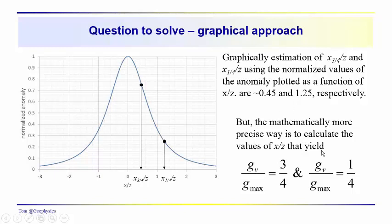But mathematically as we did for x one half, we are solving for this ratio, gv over gmax when it falls to three quarters of its maximum value, or gv over gmax when it falls to one quarter of its maximum value.